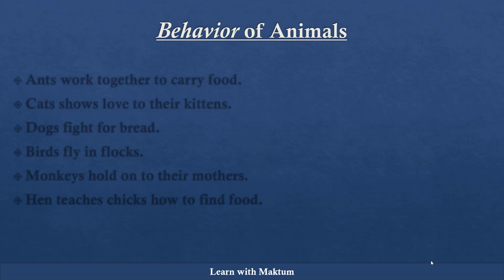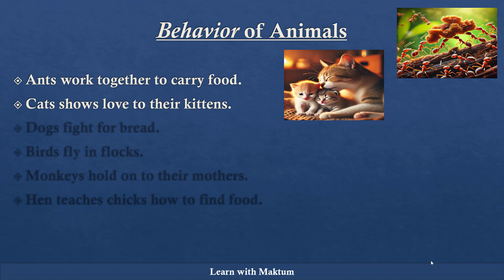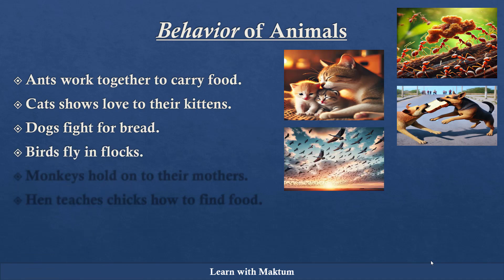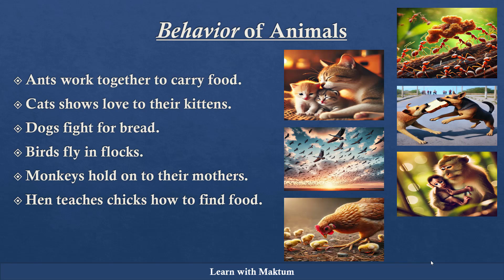Starting with behavior of animals. Animals live among us and show unique behaviors. Like you can see here, ants always work together while carrying the food, and cats showing love to their kittens. Then dogs fighting for the food, or maybe birds which are flying in flocks. Monkeys attaching to their mothers, and teaching chicks how to find food. So here you can see different behaviors.